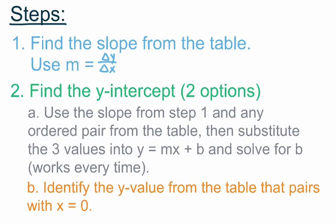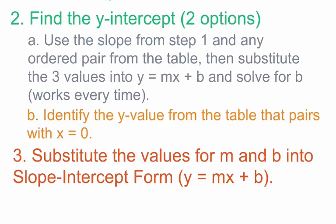We can use either of those two options. Option A will work every single time; Option B is easier, however. Once we have identified the slope in step 1 and the y-intercept in step 2, we move on to step 3, which is to substitute the values for m and b into slope-intercept form: y equals mx plus b. We take the slope value found in step 1, substitute in for m, and the b value found in step 2, substitute in for b. That gives us our equation representing that table.